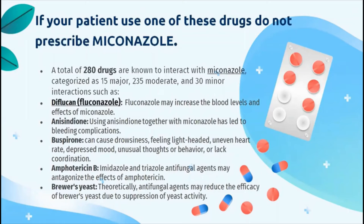Anisindione, if used with Mykonosol, has led to bleeding complications. Another interaction is with risperidone, which can cause rough sinus, feeling lightheaded, uneven heart rate, depressed mood, and unusual thoughts or behaviors or lack of coordination when used with Mykonosol. Amphotericin B combined with imidazole and triazole found in Mykonosol can antagonize the effects of Amphotericin B.